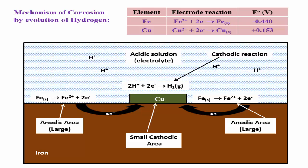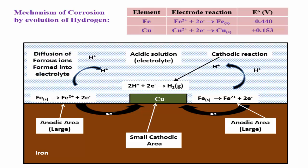Fe2+ ions diffuse into the electrolyte and react with H+ ions in the acidic solution. The overall reaction is: Fe(s) + 2H+ → Fe2+ + H2(g).